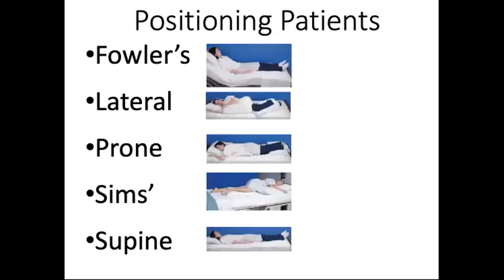Patient positions serve specific purposes. Fowler's and high Fowler's positions help with breathing. Semi-Fowler's is 30 degrees; high Fowler's is 90 degrees. Lateral or Sims position helps take weight off the sacral area and redistribute pressure to reduce pressure ulcers. Prone positioning was used extensively during COVID. Supine, also known as dorsal recumbent, has the patient lying on their back with shoulders elevated on a small pillow. Most patients prefer low Fowler's over supine.